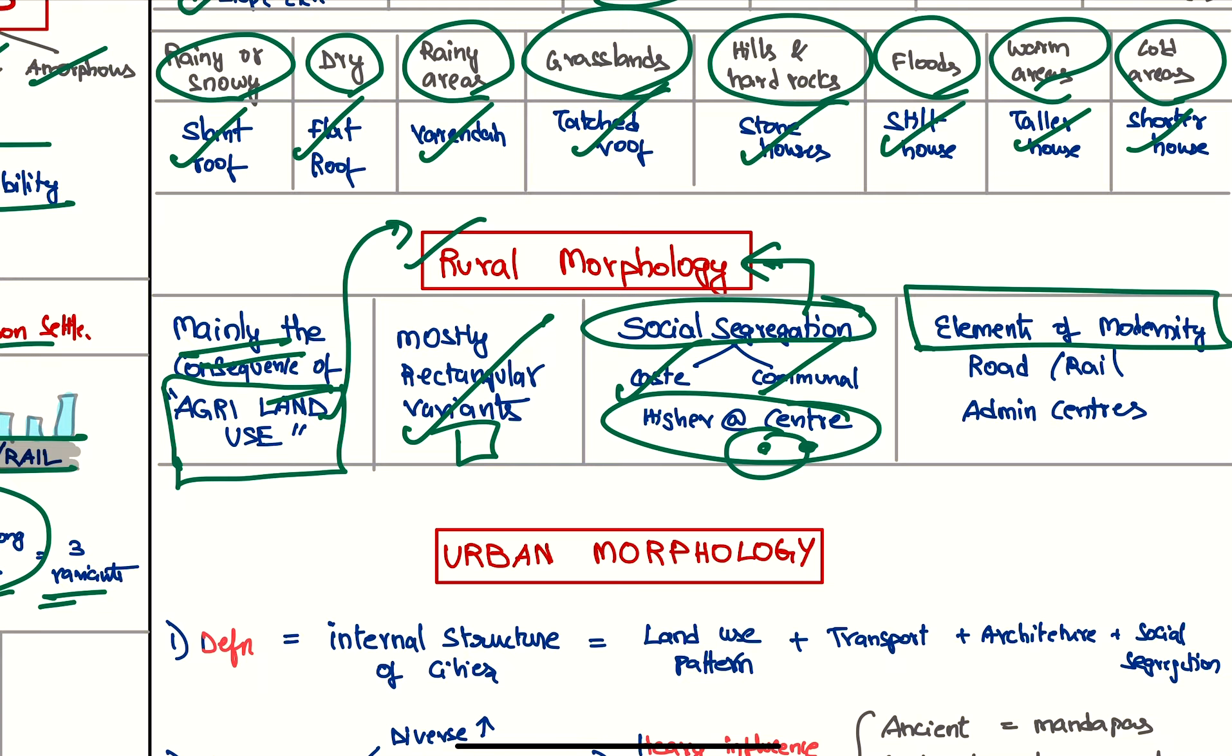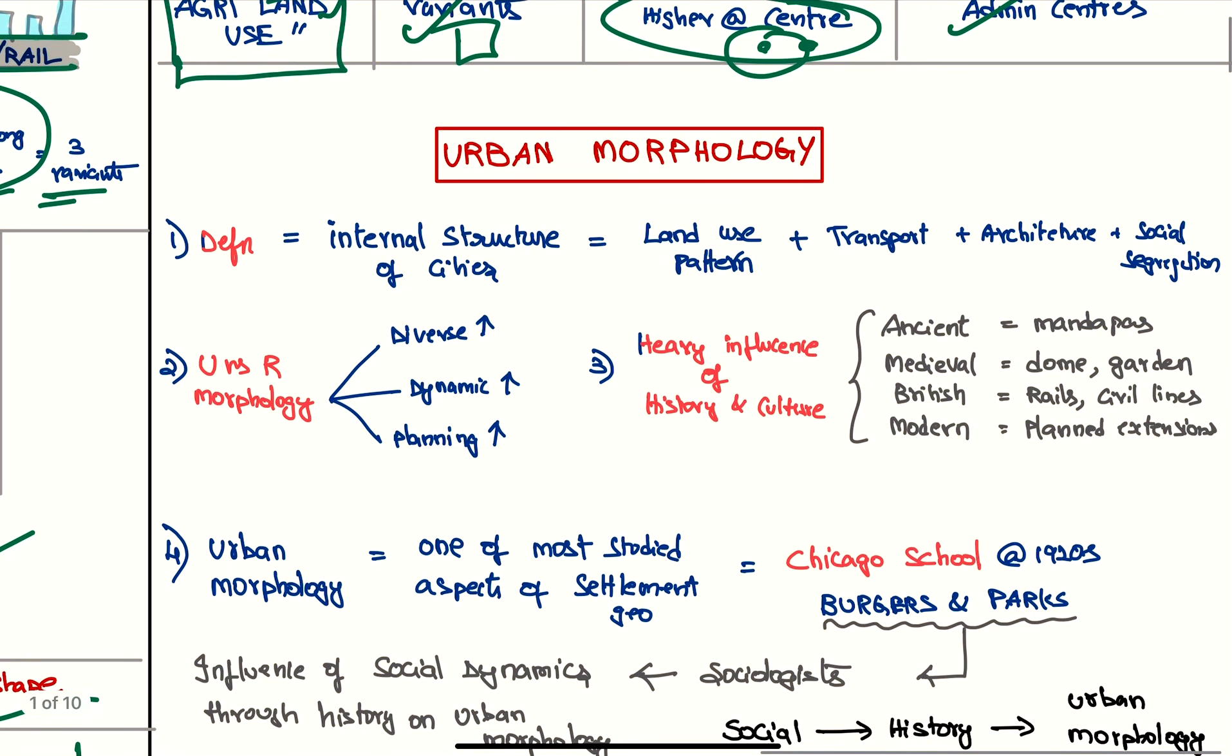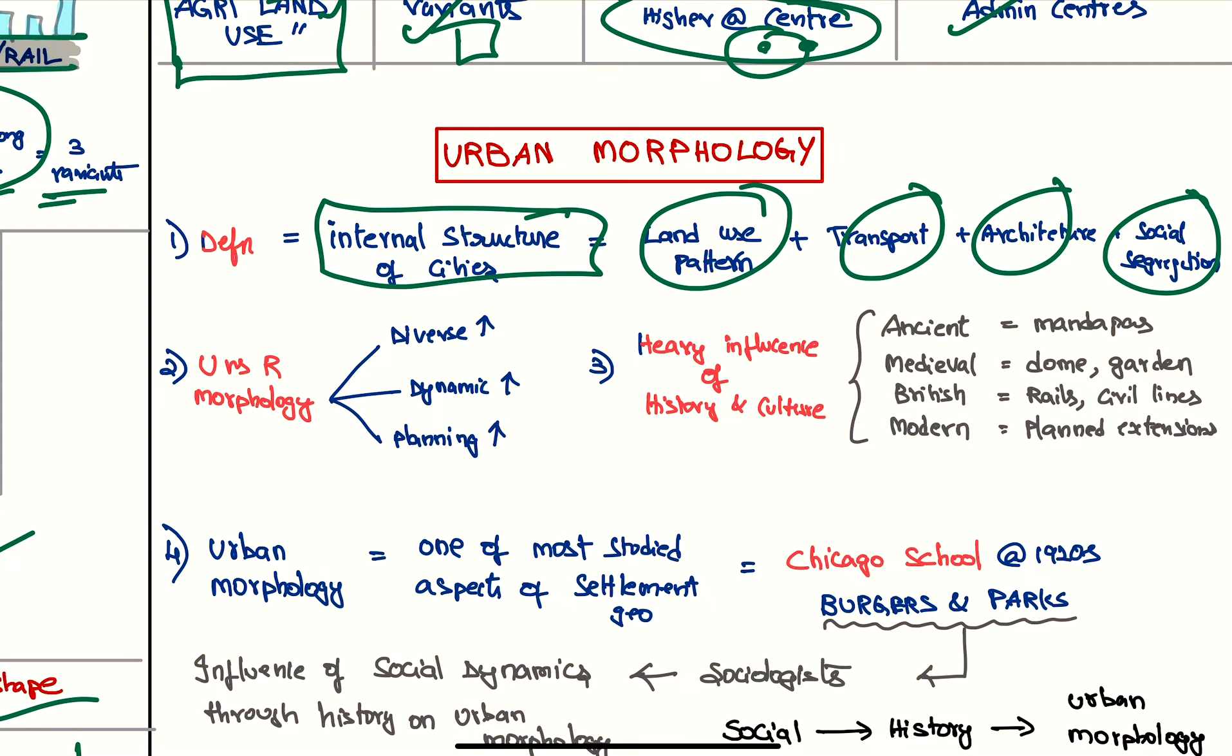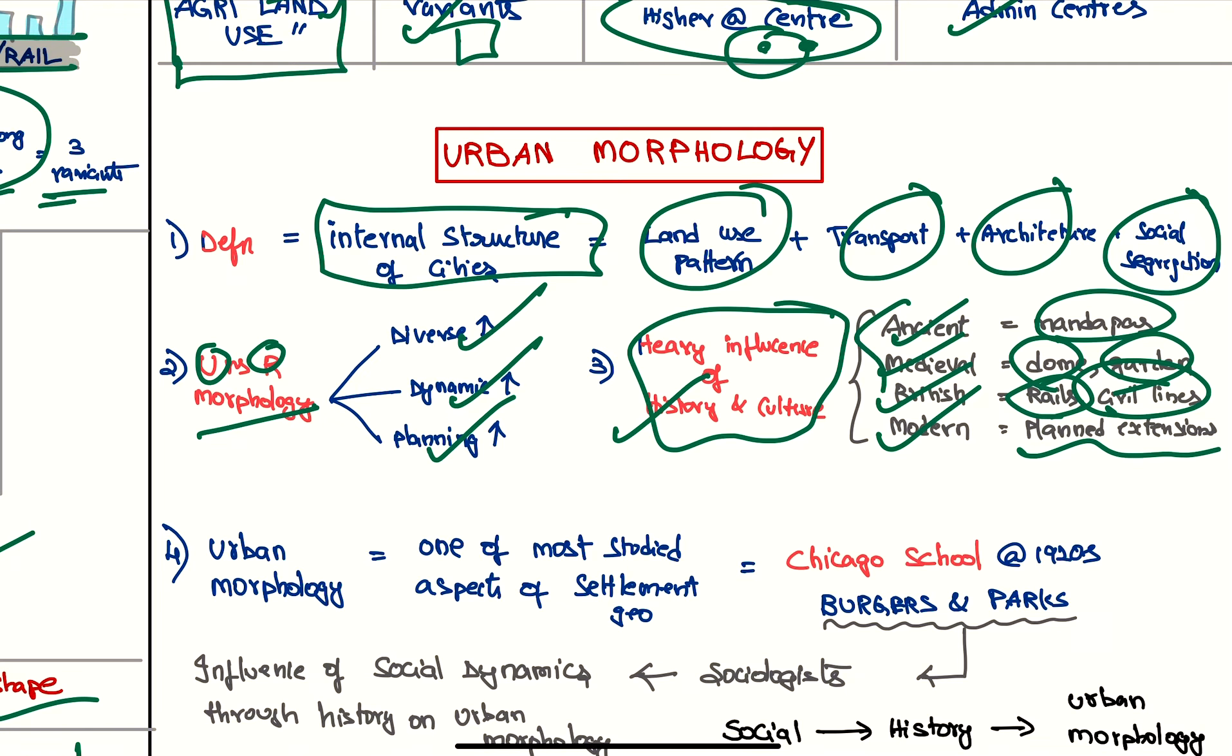Next we have urban morphology. The definition is internal structure of the cities about land use pattern, transport, architecture, and social segregation. Rural versus urban morphology: these are more diverse, more dynamic, and more elements of planning involved. Heavy influence of history and culture is seen in India. For example, from ancient history we have mandapas; medieval we have domes and gardens; from British we have rails and civil lines; and modern planned extensions. So the history influence is very high on urban morphology.